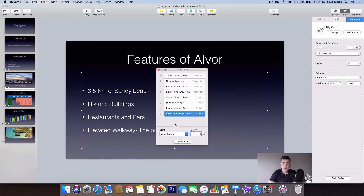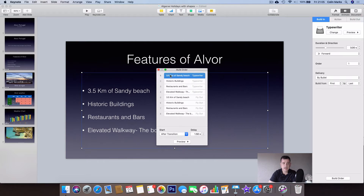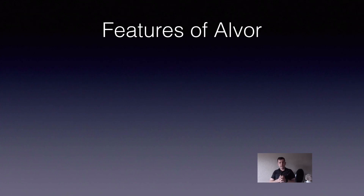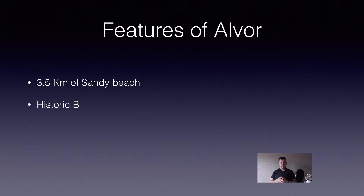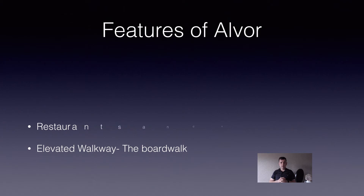I'll turn the timings down from five seconds to three seconds so it's not too long to watch. They're now set to three seconds each and one and a half seconds for the initial entry. We'll go ahead and play it — it runs by itself. After 1.5 seconds the first bullet comes in, then three seconds later the next one appears, then three seconds later the next one, and then after the last one appears, they all start going out automatically.